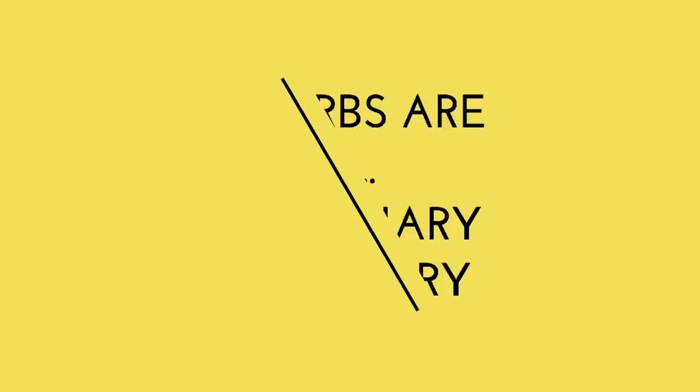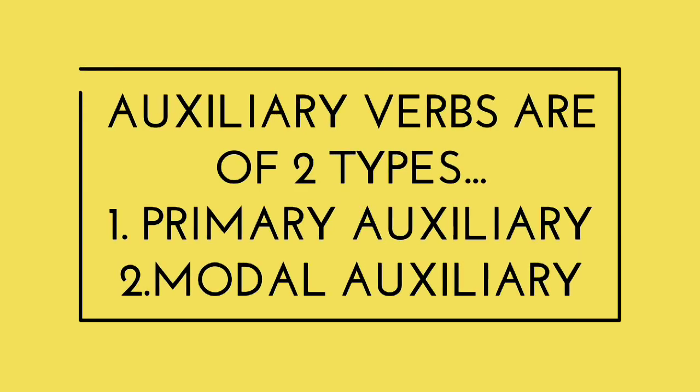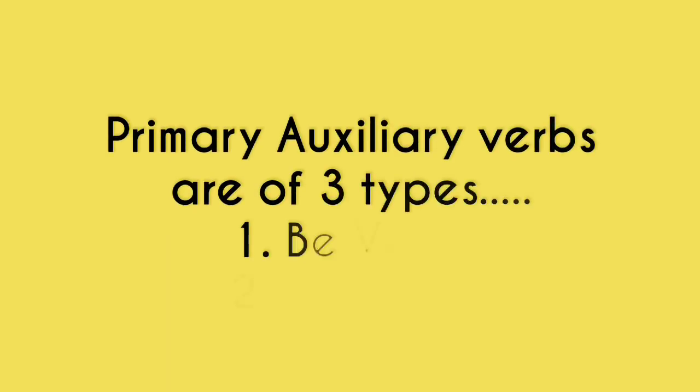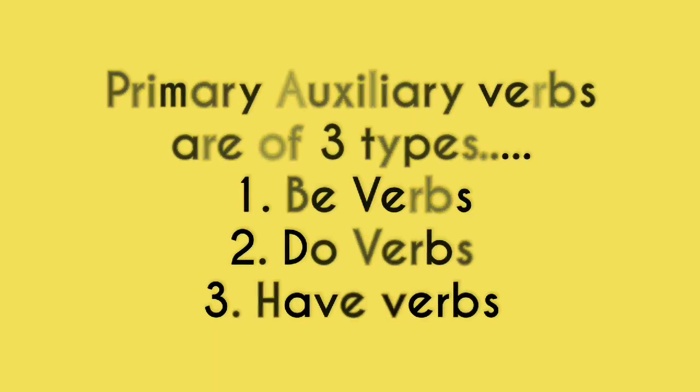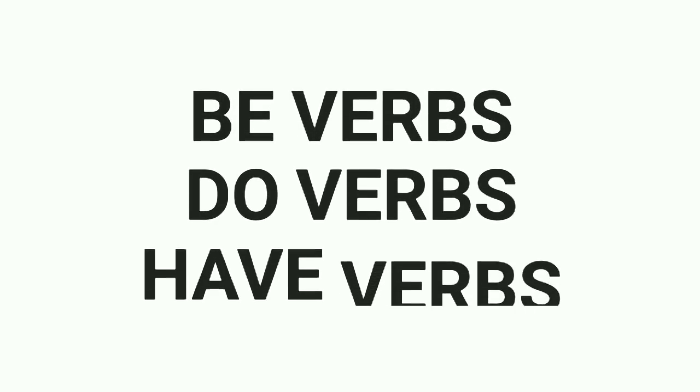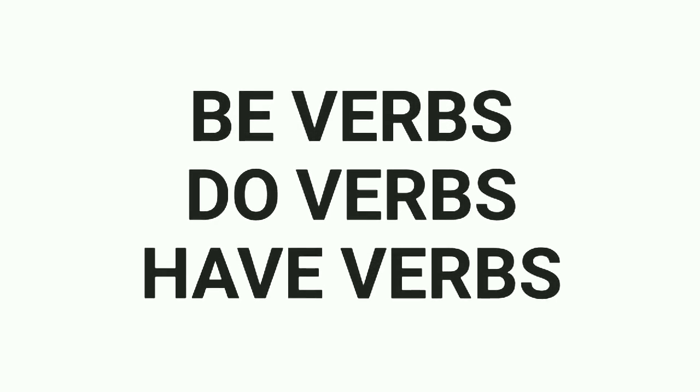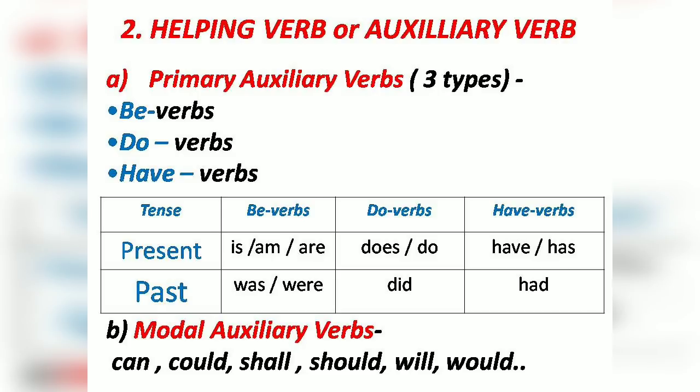Now let us know about the auxiliary verbs. Auxiliary verbs are of two types: one is primary auxiliary verb and the other is modal auxiliary verb. There are three types of primary auxiliary verbs: they are be-verbs, do-verbs, and have-verbs.